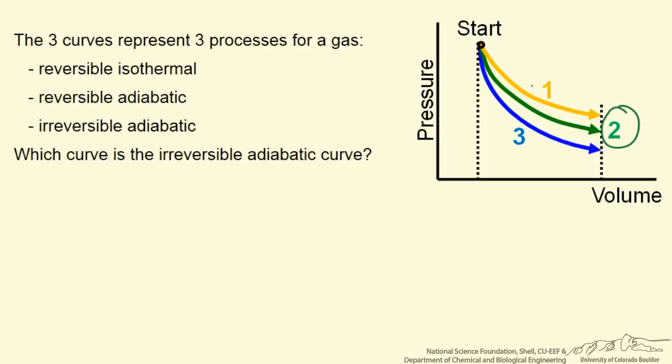You've chosen two, and that is indeed the correct answer. That corresponds to an irreversible adiabatic process. One is an isothermal process, and three is a reversible adiabatic process.